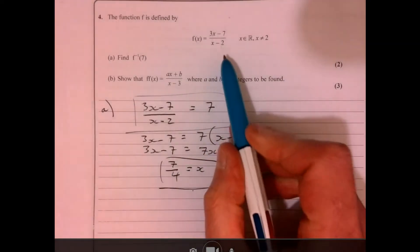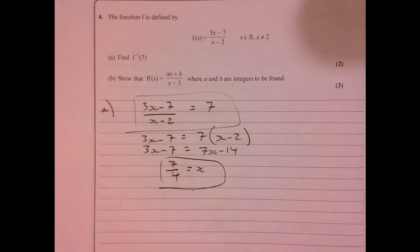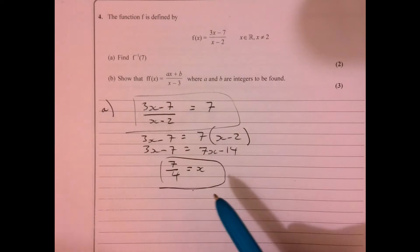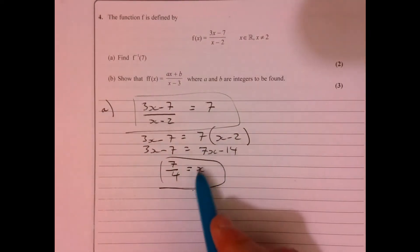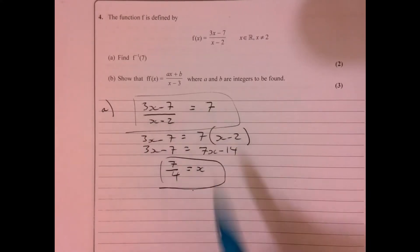You could, if you really wanted to, you could just actually work out what the inverse function is and then put 7 in. There's a lot more work involved in that. It's much easier to do this if you understand this.